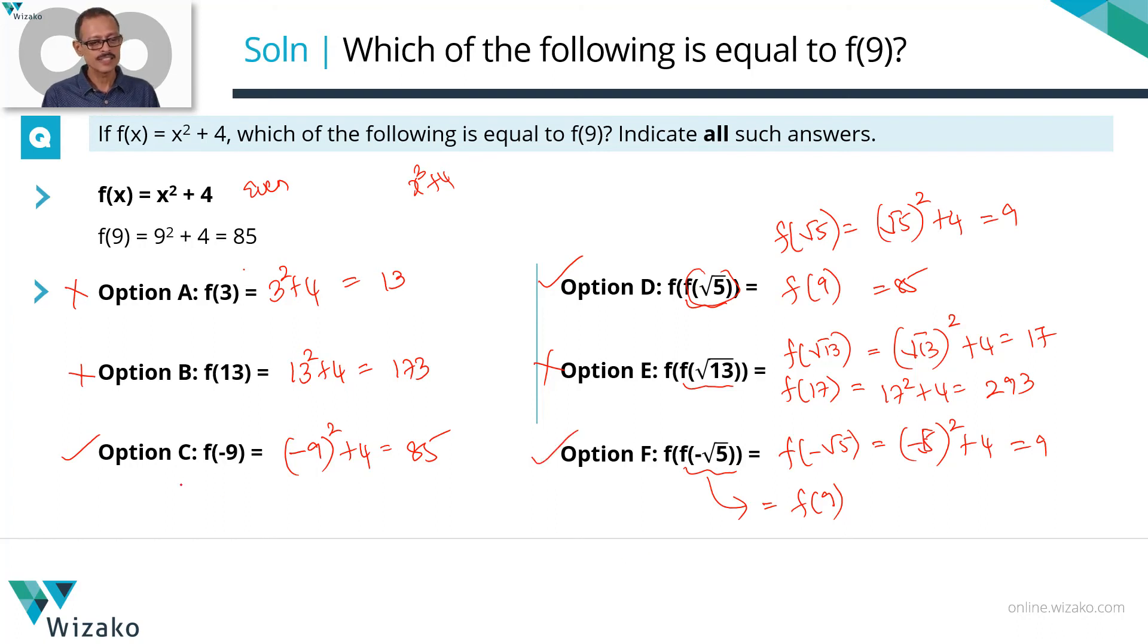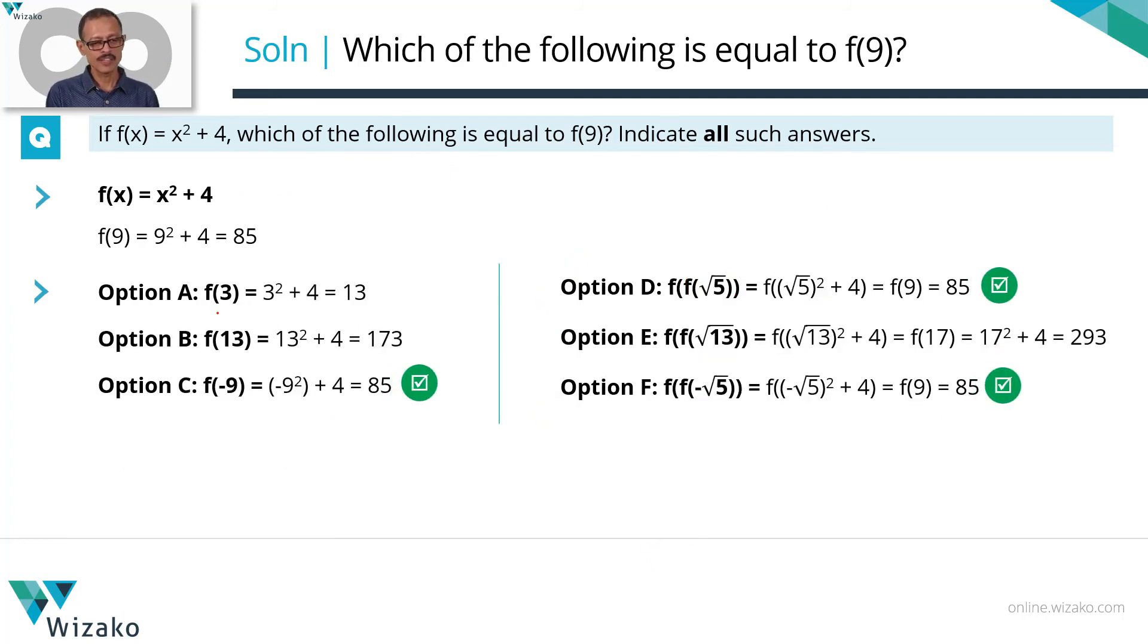So what are all our answer options? C is one, D is one and F is the third. So C, D, F are our answers. Quickly run through it in a printed form. These are the values of f(3) which is not the same as f(9). f(13) is also not the same as f(9). f(-9) ends up being the same as f(9). f(f(√5)) is the same as f(9). f(f(-√5)) is the same as f(9). f(f(√13)) is also not the same as f(9). So three answer options C, D and F.